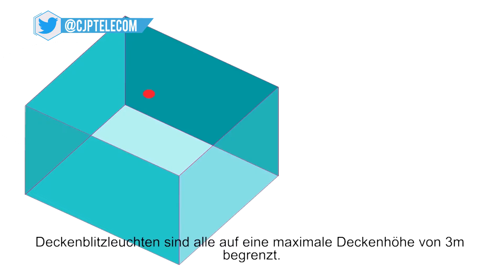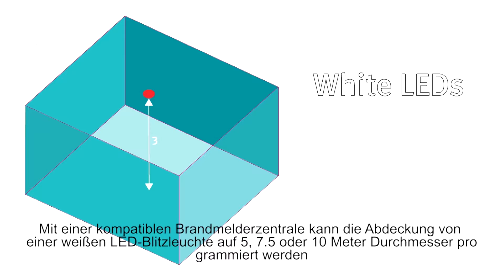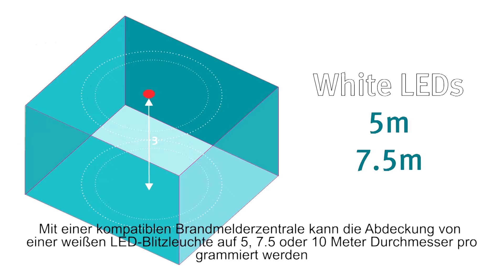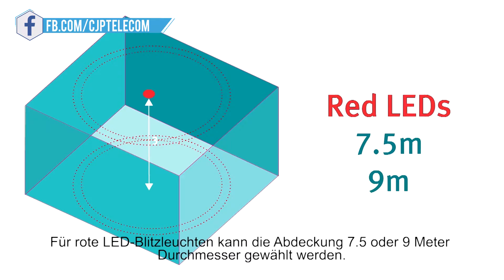Both devices have the capability of variable coverage volumes, which helps simplify the range. For the ceiling beacons, these volume coverages are all based on a maximum ceiling height of three meters, so subject to control panel compatibility, you can set the coverage of a white LED beacon to 5, 7.5 or 10 meters diameter. For red LED beacons this coverage could be set to 7.5 or 9 meters diameter.